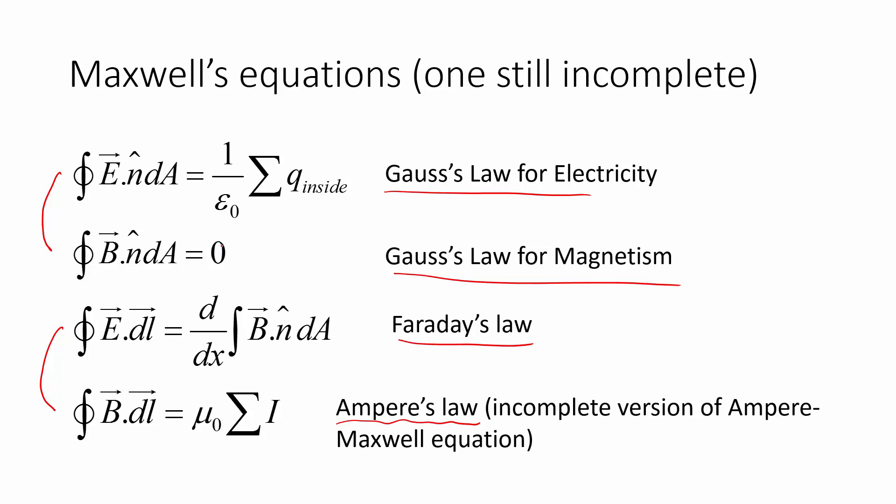and the surface integral of the magnetic field equals, well, it's less than zero, but that's actually equivalent to the number of monopoles inside. It's just that monopoles don't exist in our universe. So in fact, these two are very symmetrical. Monopoles could exist in our universe. If they did, these two would look exactly the same. Just electric field and electric charge here, magnetic field and magnetic charge over there.